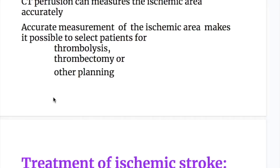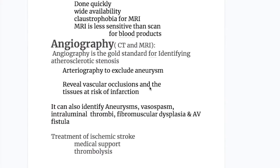Accurate measurement of the ischemic area makes it possible to select patients for thrombolysis, thrombectomy, or other planning. Angiography is the gold standard for identifying atherosclerotic stenosis.